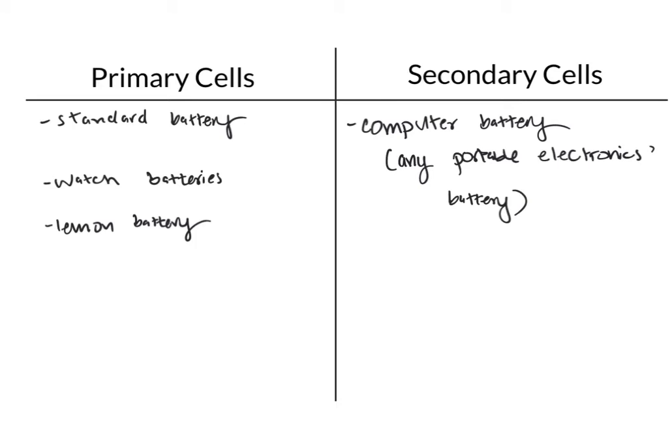Another really good example of a secondary cell is your car battery. Your car battery is used to start your car and it runs certain parts of the car. However, it is also constantly being recharged by your car's engine in order to ensure that it will continue to be able to restart your car.